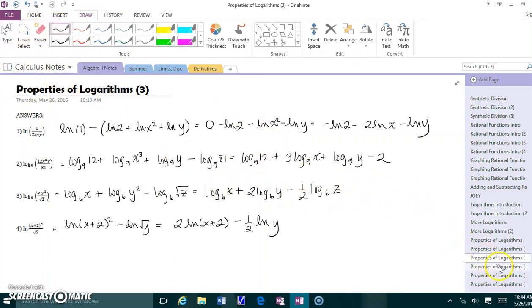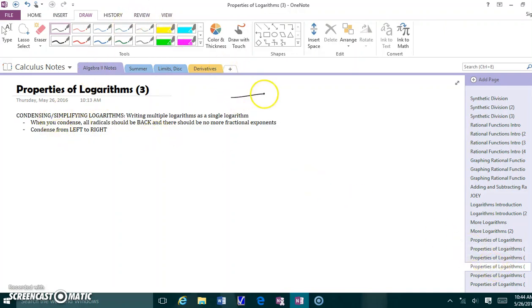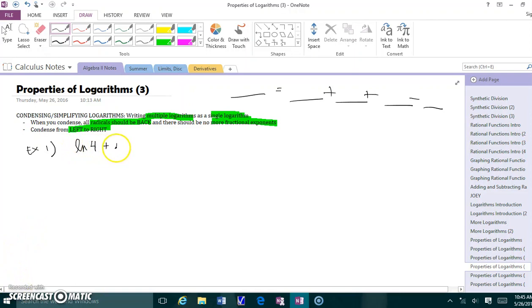Now let's move on to condensing, the exact opposite. So before, I had one logarithm and I spread it out to multiple logarithms, added or subtracted, something like that. Now what's going to happen is I'm going to have many logarithms that are added or subtracted and I'm going to go to a single logarithm. Now when you do that, so when you condense, what's going to happen is it's the exact opposite again. All radicals should return. So there should be no more fractional exponents. And one thing to keep in mind is when we condense, we're always going to go left to right. For example one, let's do a relatively easy one. I have three different logarithms. All of their terms are added. So the logarithms are added here. So what's going to happen is to go backwards, you're going to multiply. That's that property number one.